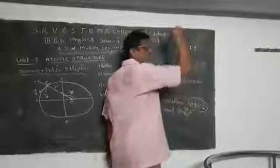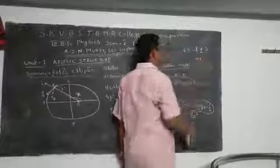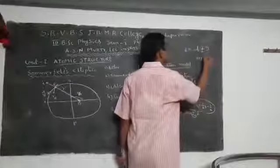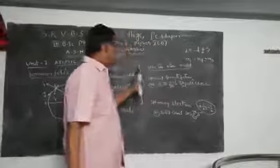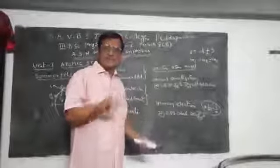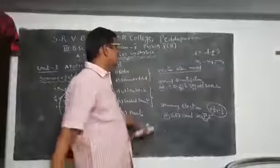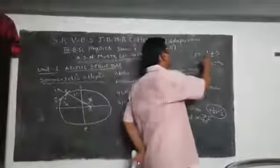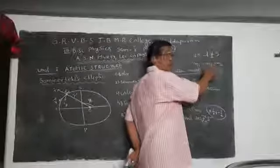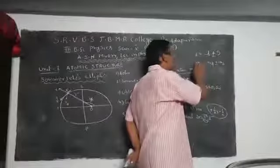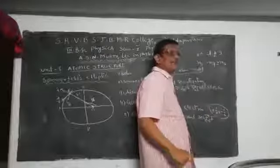Similarly, because of magnetic moments, we have the magnetic orbital quantum number M_L, the magnetic spin quantum number M_S, and M_L plus M_S gives M_J. In this way, the vector atom model suggests seven quantum numbers: principal quantum number n, orbital quantum number, spin quantum number, total angular momentum quantum number, magnetic orbital quantum number, magnetic spin quantum number, and total magnetic momentum quantum number.